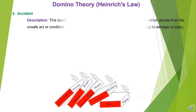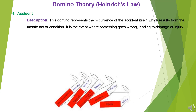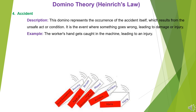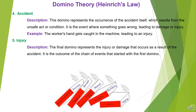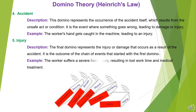Domino 4 — Accident: This domino represents the occurrence of the accident itself, which results from the unsafe act or condition. It is the event where something goes wrong, leading to damage or injury. Example: The worker suffers a severe hand injury, resulting in lost work time and medical treatment.